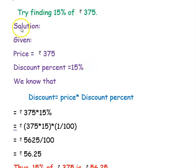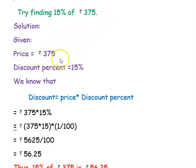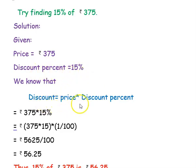The next example: try finding 15 percent of rupees 375. The price is rupees 375 and the discount percent is 15 percent. We know that discount equals price multiplied by discount percent.